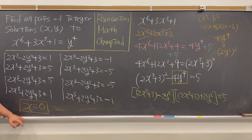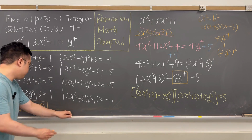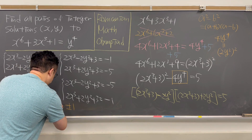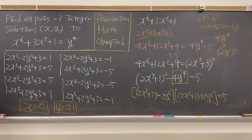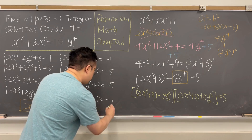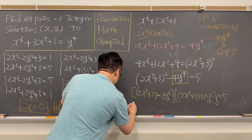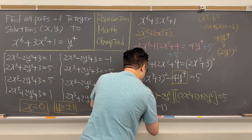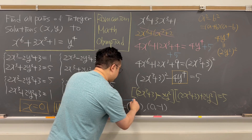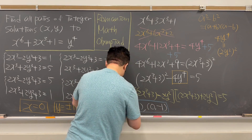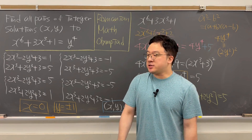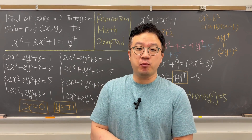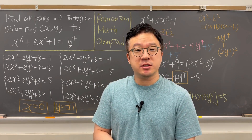If you plug x equals 0 into all 4 systems, the only two possible integer values of y are plus or minus 1. So the final solution is: (x, y) = (0, 1) or (0, −1). That is the final answer for this Diophantine equation — a pretty interesting problem from the Romanian Math Olympiad. I'll be back with more videos and more questions like this soon.